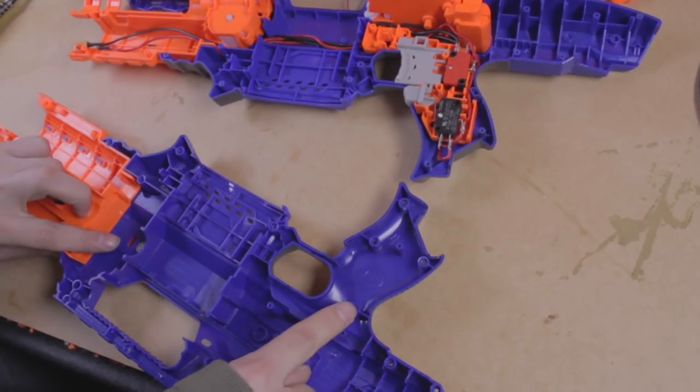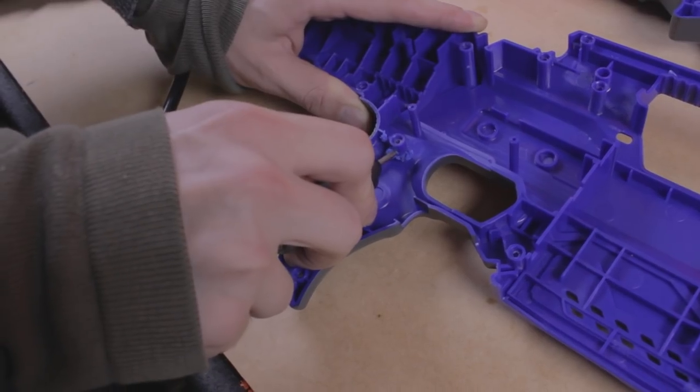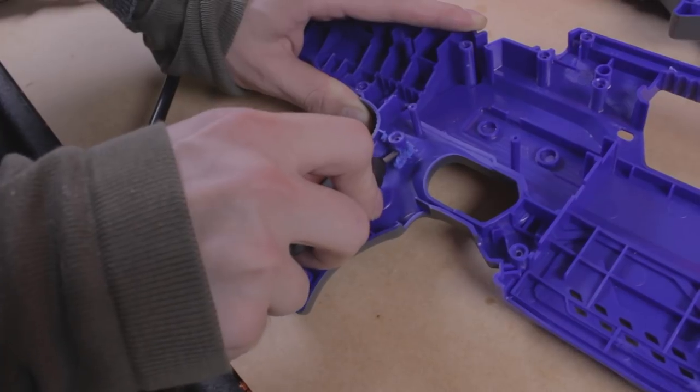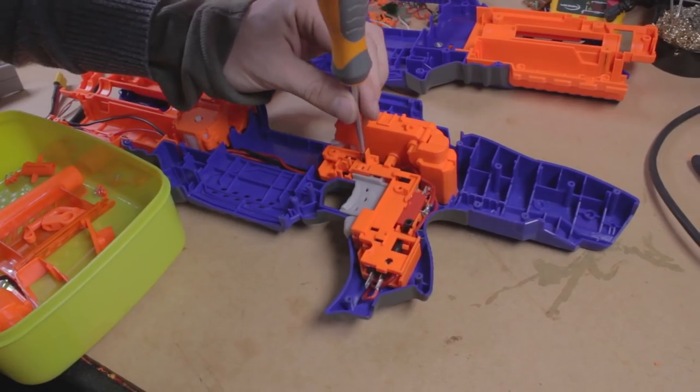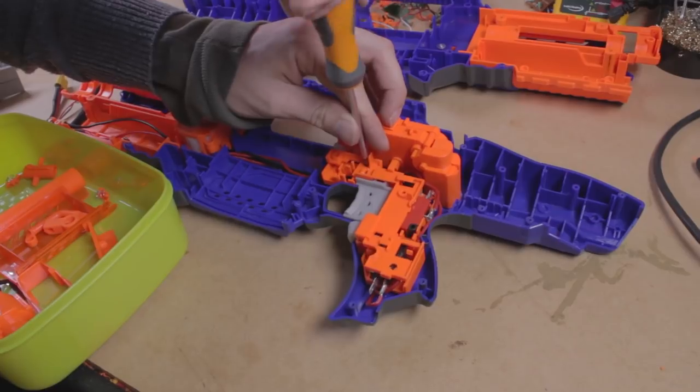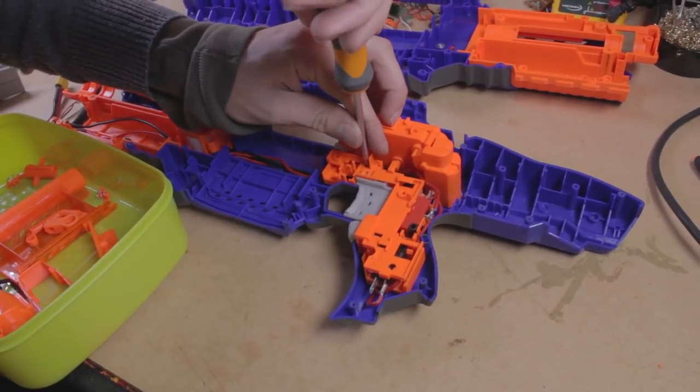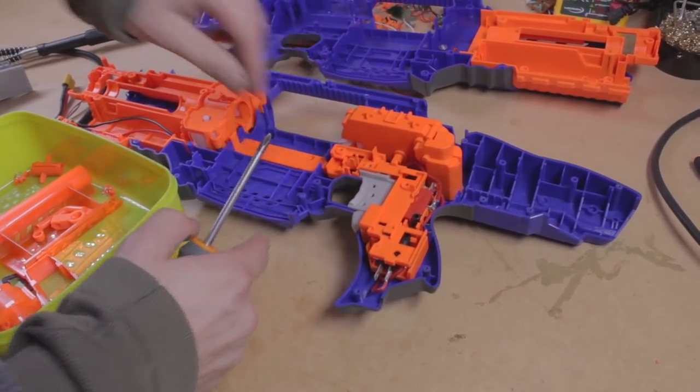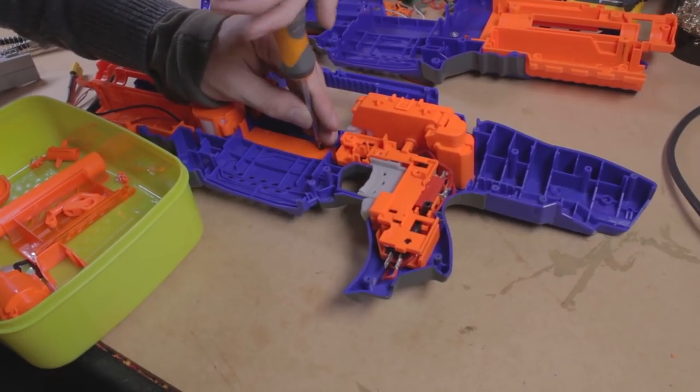Before the shell can go back together, we need to remove some of the pegs on the opposite side. Dremel them out until the shell fits together. We can now reassemble. Screw in the top plate of the trigger group to hold all the parts in place and cover the wires with the magwell cover plate. Don't forget to screw in the pusher mechanism.